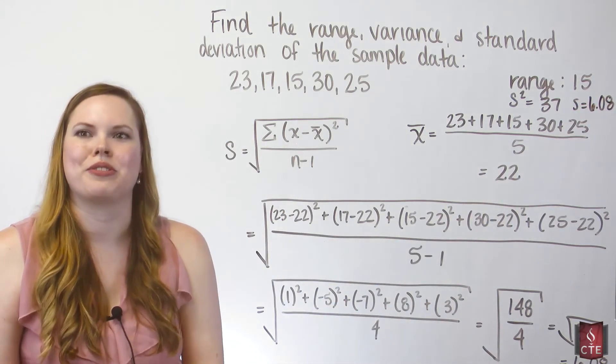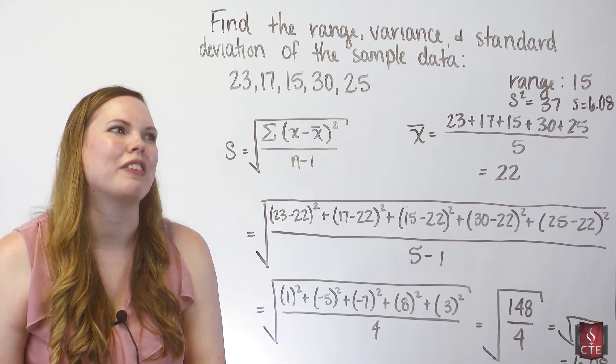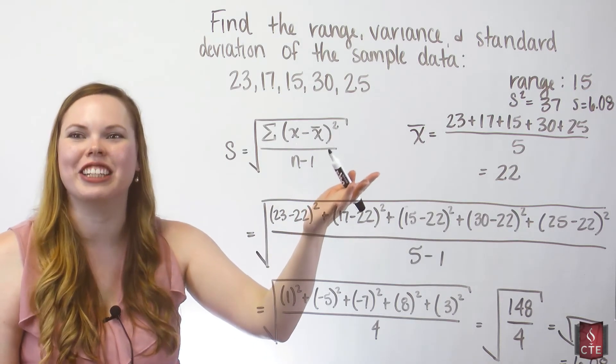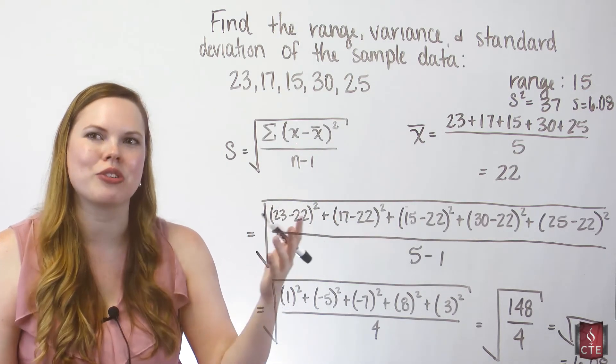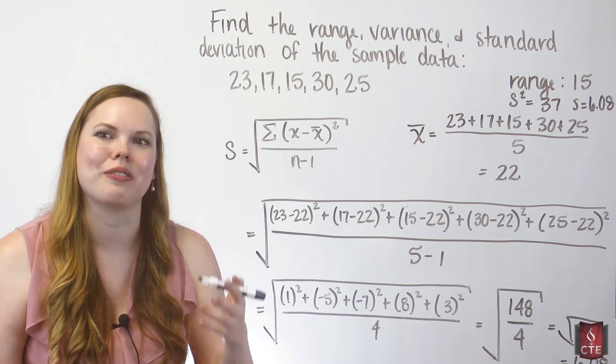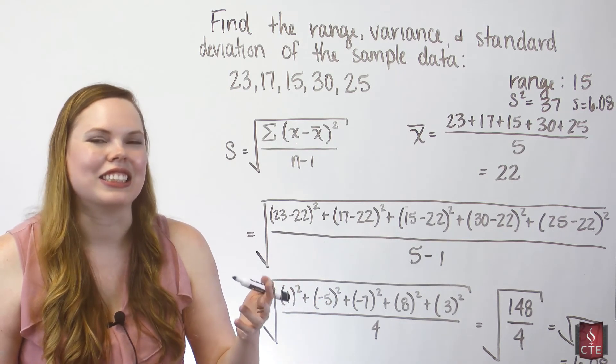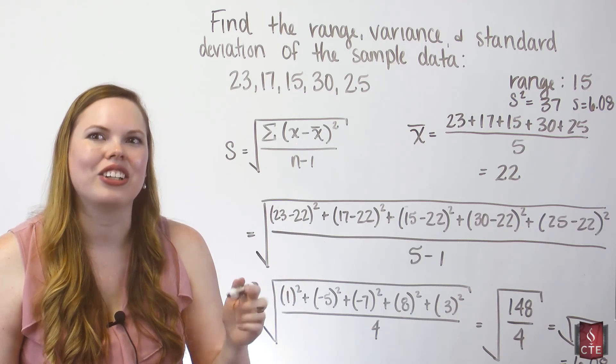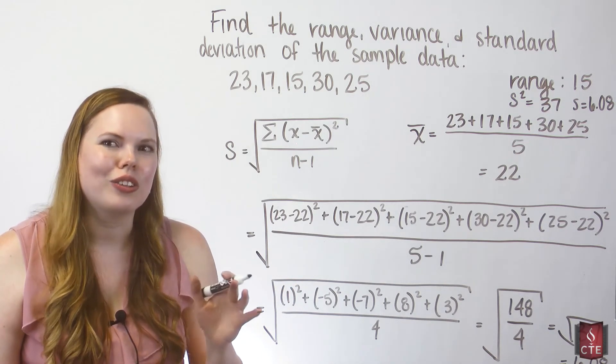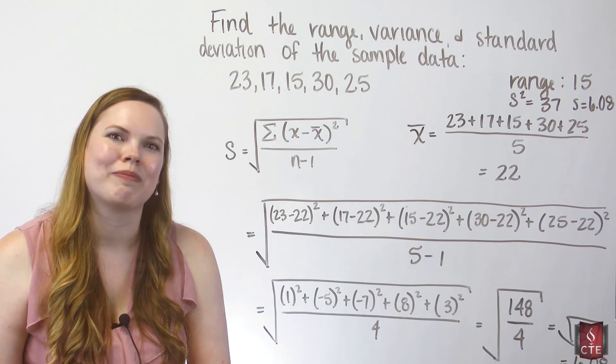And there's all three of our measures of variation. Notice that they are very different. And that's okay because they are measuring different types of variation. The range measures the difference between the highest and lowest. Variance is the square distances. And then standard deviation is close to the average distance from the mean.